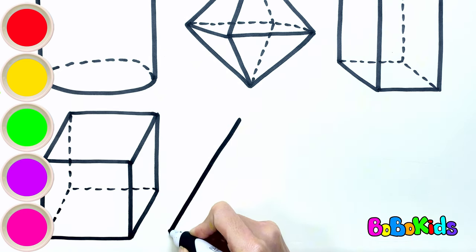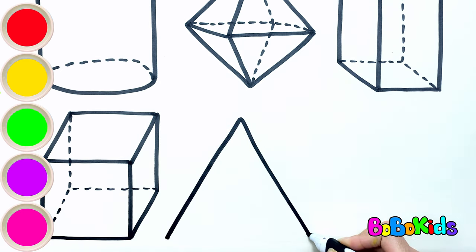This is a 3D triangle. Let's draw a triangle in front. Add straight lines behind.